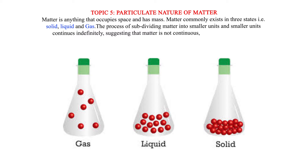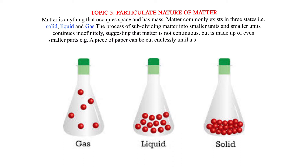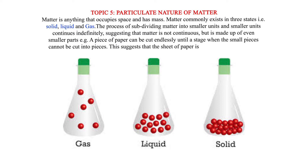Matter is made up of even smaller parts. For example, a piece of paper can be cut endlessly until a stage when the small pieces cannot be cut into further pieces. This suggests that the sheet of paper is made up of tiny particles.